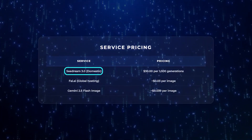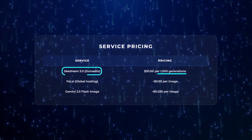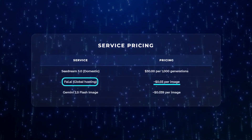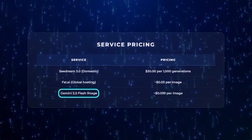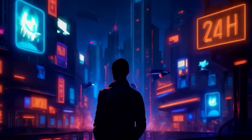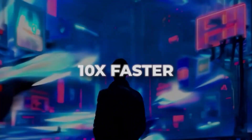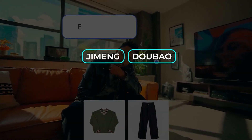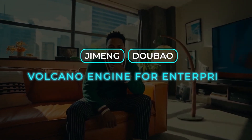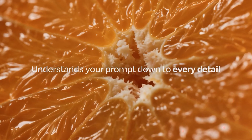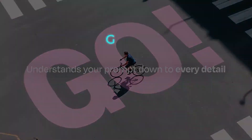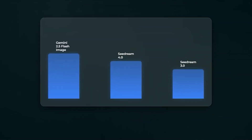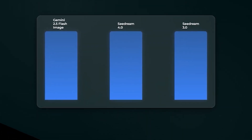Pricing is aggressive. Domestically it holds at $30 per 1,000 generations. Globally, on fast platforms like Fal.ai, it's around $0.23 per image, while Gemini 2.5 Flash sits closer to $0.039. ByteDance says raw image inference is over 10 times faster than previous versions. Early feedback praises editing accuracy — faithful changes from text prompts without breaking composition. Availability runs through Jimeng and Doubao on the consumer side, Volcano Engine for enterprise. On public leaderboards, Gemini 2.5 Flash still tops both generation and editing — C-Dream 4.0 hasn't been ranked yet. C-Dream 3.0 sits fifth for generation and sixth for editing.